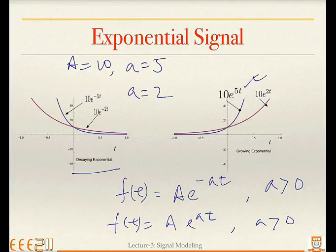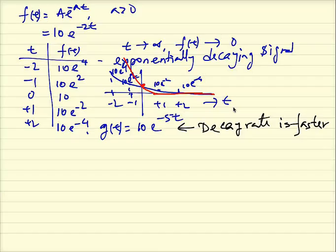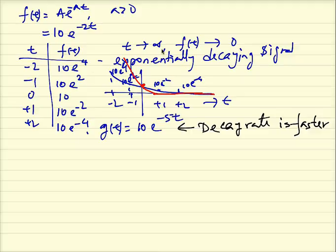You can actually plot this by making a table to show how different points of f(t) vary with respect to t. For f(t) = e^(−2t), plotting t values of −2, −1, 0, +1, +2 and the corresponding f(t) values shows that as t increases, f(t) grows lower. When t goes to infinity, f(t) goes to 0. If you plot 10·e^(−5t), it decreases at a much faster rate because you have a higher value of 'a'.